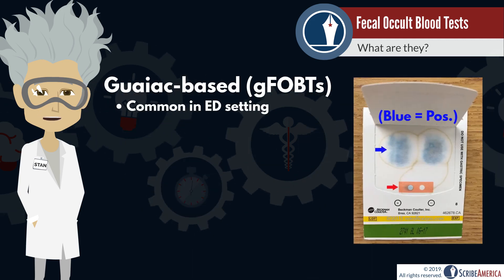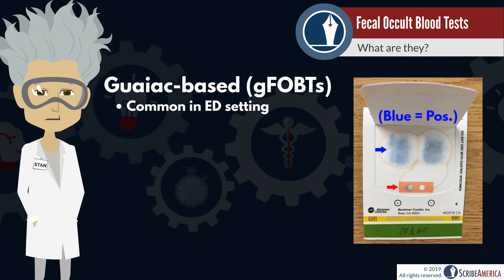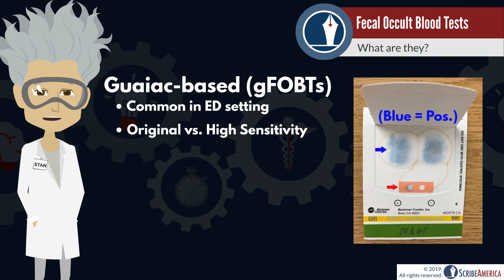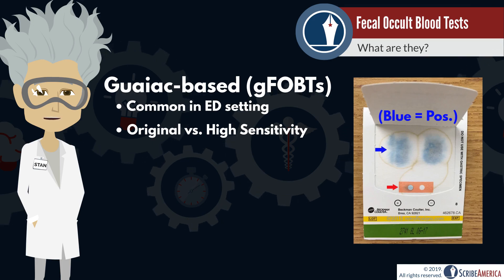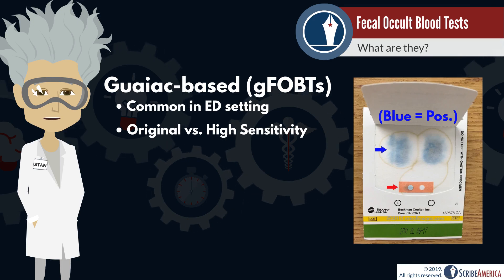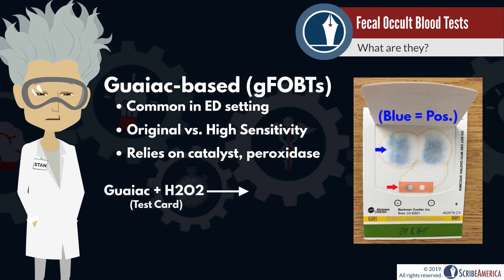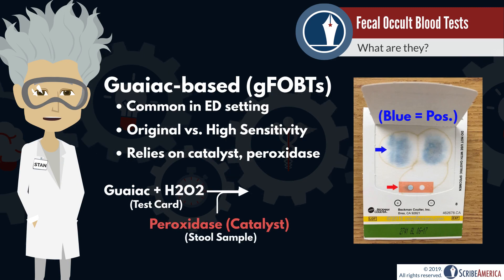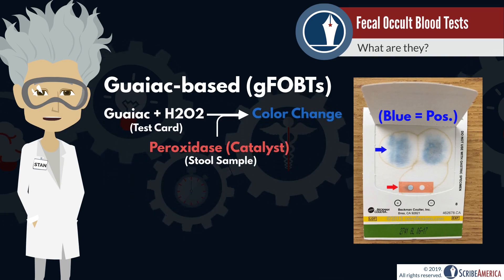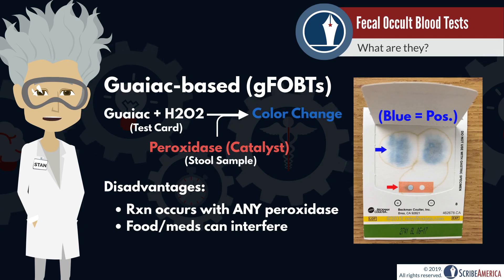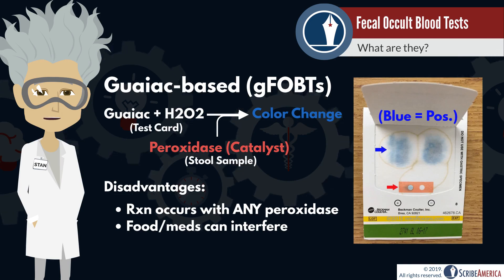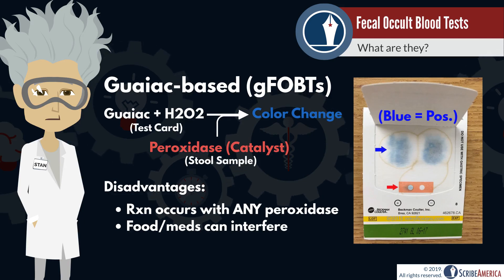GUIAC-based FOBTs are often seen in an emergency setting. There are high-sensitivity GUIAC-based FOBTs, such as the Hemocol Sensa, and older GUIAC-based FOBTs, such as the Hemocol 2. These tests rely on the oxidation of GUIAC paper by hydrogen peroxide, catalyzed by the peroxidase activity of hemoglobin. The disadvantage is that this reaction will occur with any peroxidase found in feces, such as peroxidase found in digested plants and red meats, and the reaction is affected by certain medications or supplements. In other words, certain foods and medicines can result in a false positive.